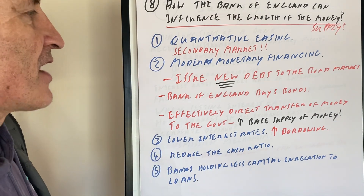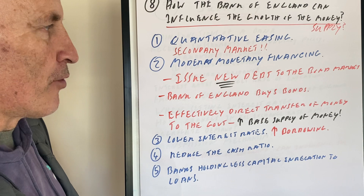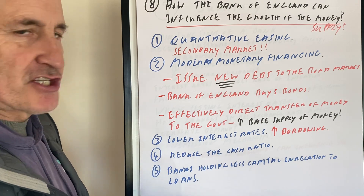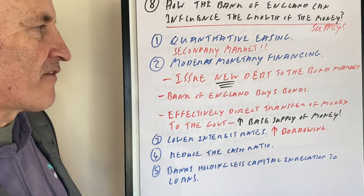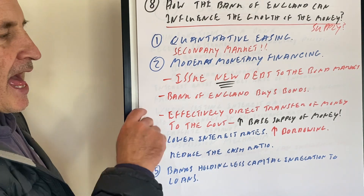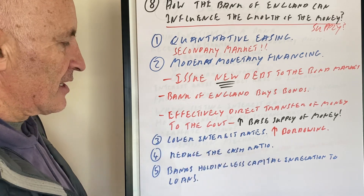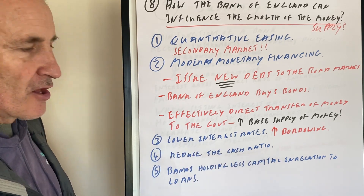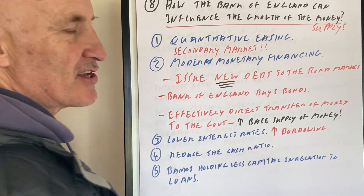Number two, modern monetary financing, is where the bank creates its own bonds, then buys them and gives the money directly to the government, and therefore they can spend it just like in fiscal policy.